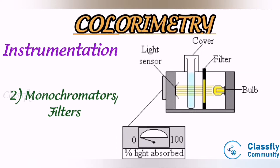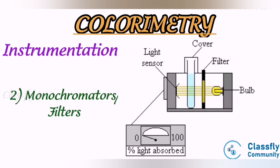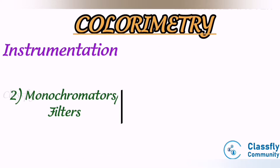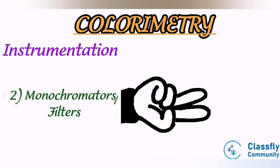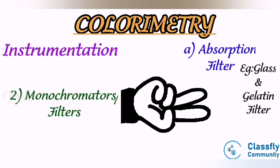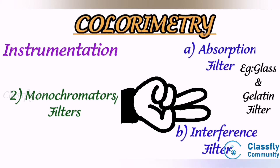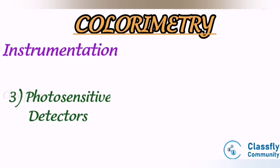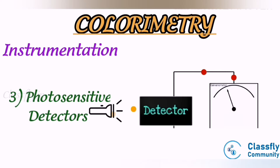Second, monochromators or filters: this is a means of selecting a sufficiently narrow waveband. Filters absorb the light of unwanted wavelengths and allow only monochromatic light to pass through. Filters are mainly divided into two types: absorption filters (for example, glass filter and gelatin filter) and interference filters.